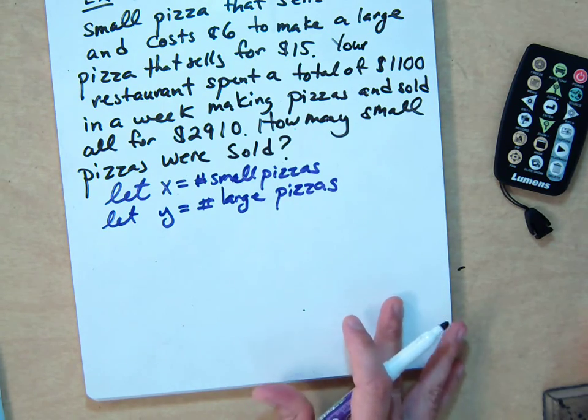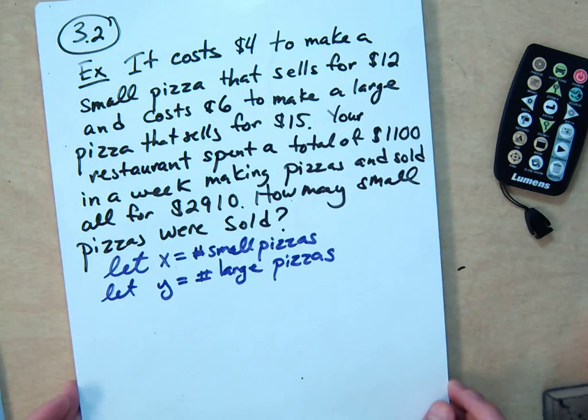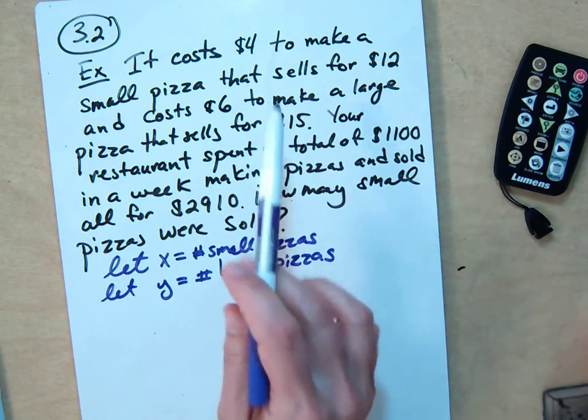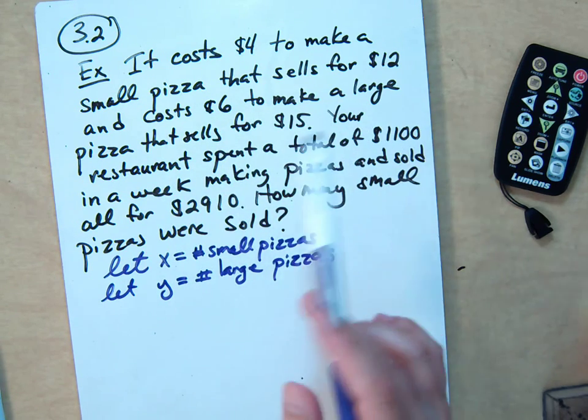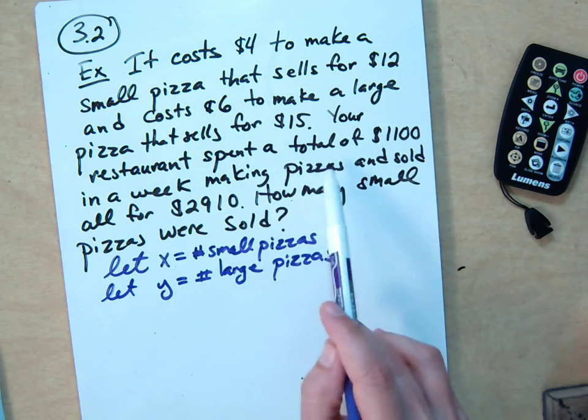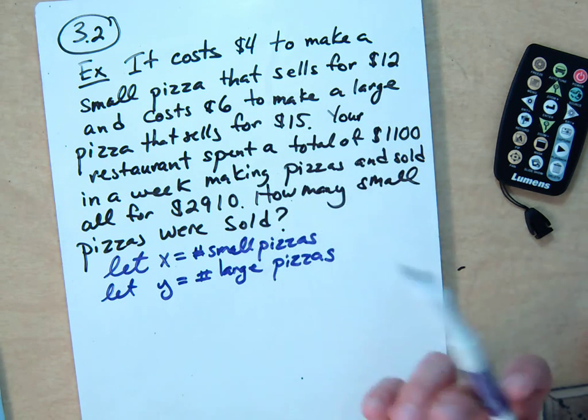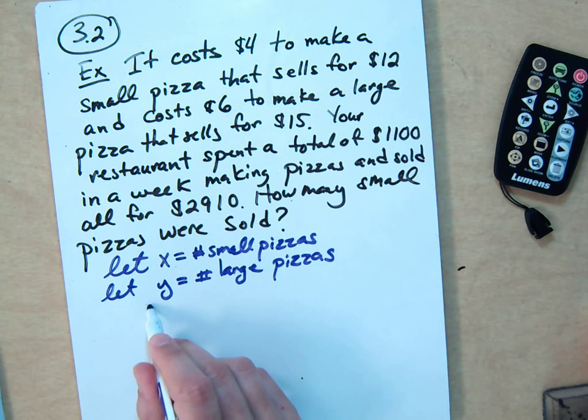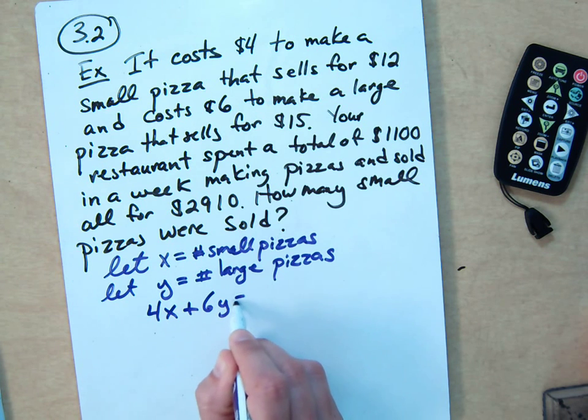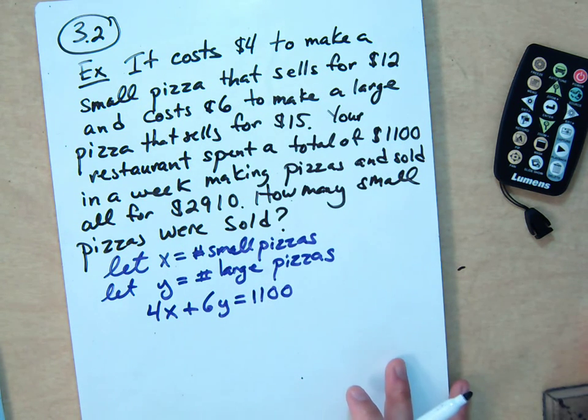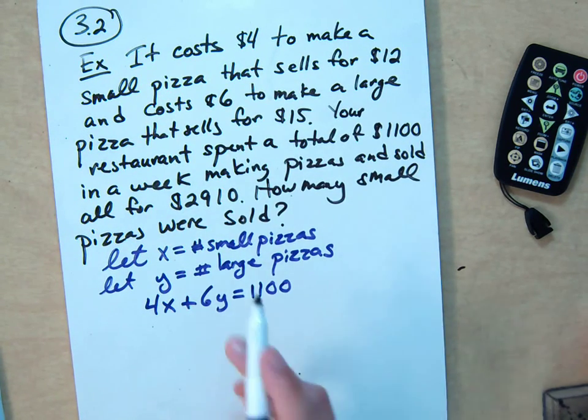All right. So we just want to write two equations here and use the information in the problem. So it costs $4 to make a small pizza and $6 to make a large pizza. When you say how much your restaurant spent, $1,100, that's what you put into making the pizzas. So it's basically just 4x + 6y = $1,100. That's one equation.